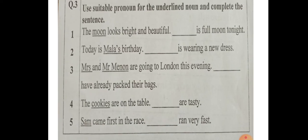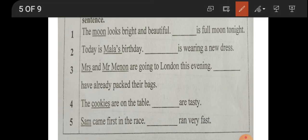Next, question three: choose a suitable pronoun for the underlined noun and complete the sentence. A pronoun is a word used instead of a noun. Here: 'The moon looks bright and beautiful. Dash is a full moon tonight.' Moon is the underlined noun, so we use 'it' — it is a full moon tonight.